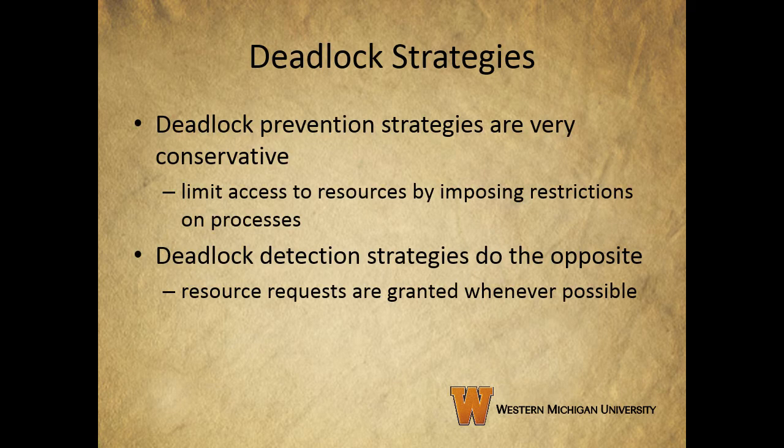Deadlock prevention strategies are very conservative. They limit access to resources by imposing restrictions on processes. Deadlock detection strategies do the opposite — they're at the other extreme. Resource requests are granted whenever they possibly can be.